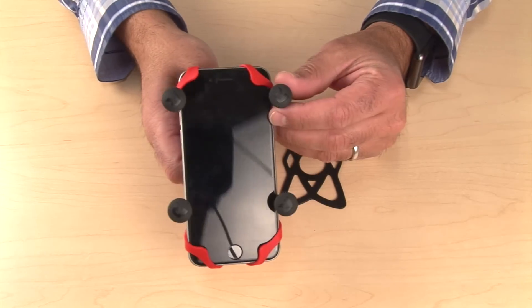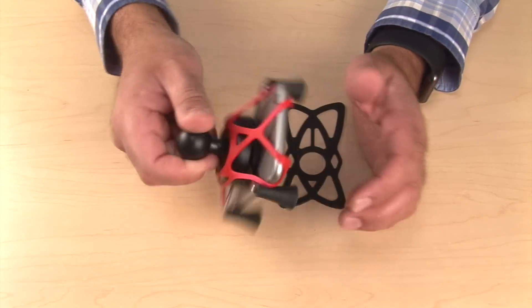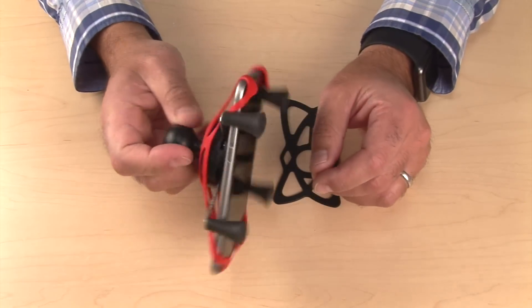This is the iPhone 6, and you can see it holds it in, no problem, and it removes any movement in the mount.